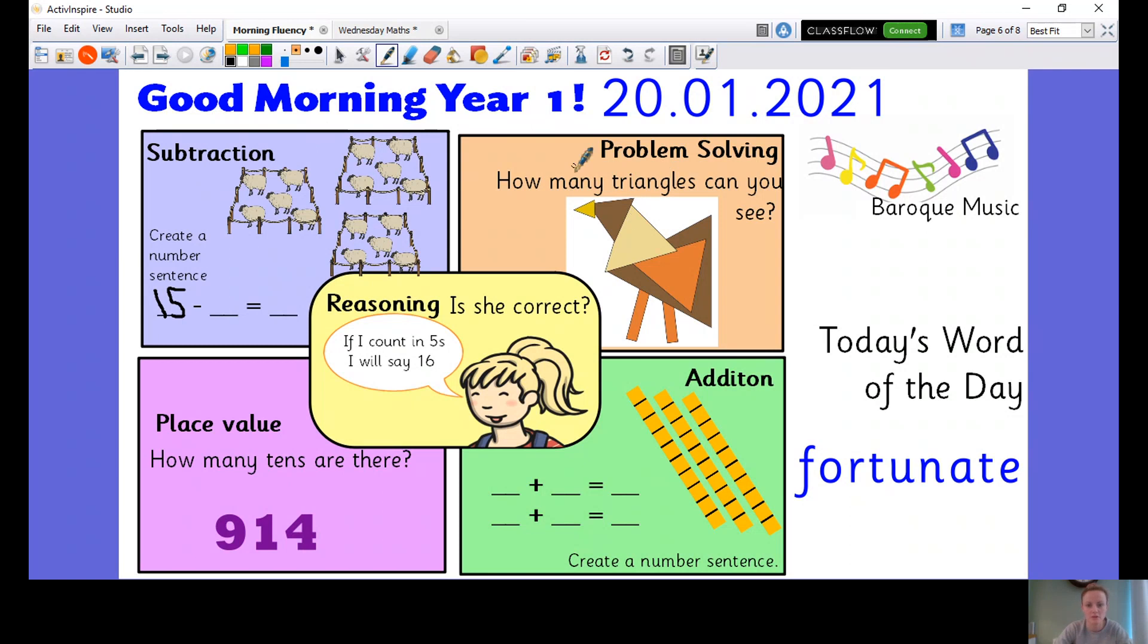OK, your problem solving question over here. How many triangles can you see? So it might be covered up a little bit. So there's one big one here. So you've got one. See if you can write the number, five triangles.